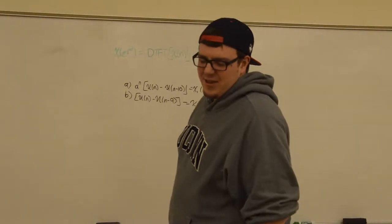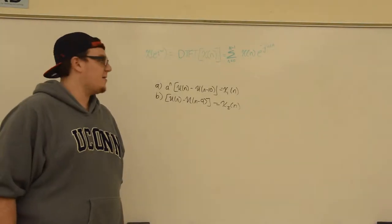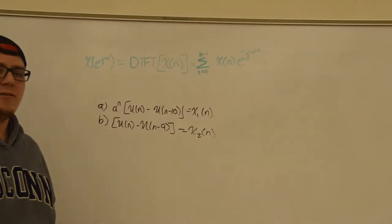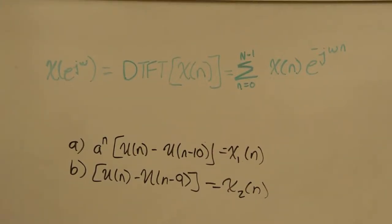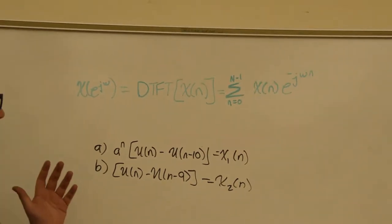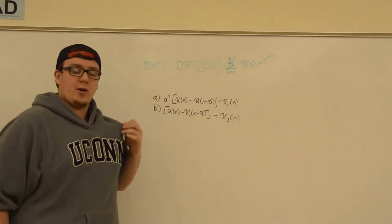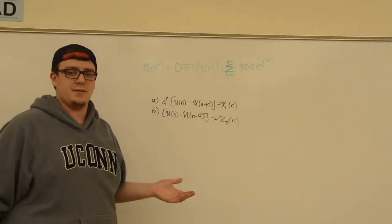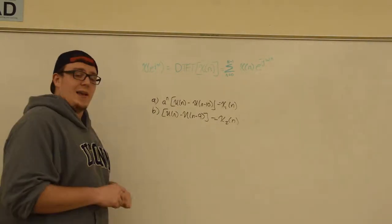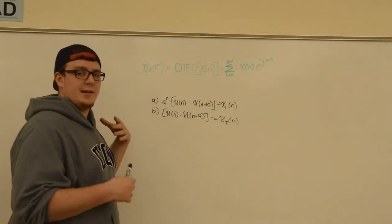Hey guys, this is Andrew with HKN and I have another EC3101 signals and systems problem. Today we're moving away from analog signals and we're going to talk about the discrete time Fourier transform, which allows us to analyze the frequency components of discrete valued signals — things that only exist at certain points in time, like sampled analog functions. This is very good for digital processing.